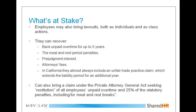The more draconian area of enforcement is employees bringing individual and class action lawsuits. It doesn't take much for an individual to find a lawyer willing to take a wage and hour case, because there is a lot they can recover: back overtime for three years, meal and rest period penalties, prejudgment interest, and attorney's fees — which are almost always recoverable if they get anything from you. That is a one-way ratchet: if they win, they get attorney's fees; if they lose, you don't get yours.